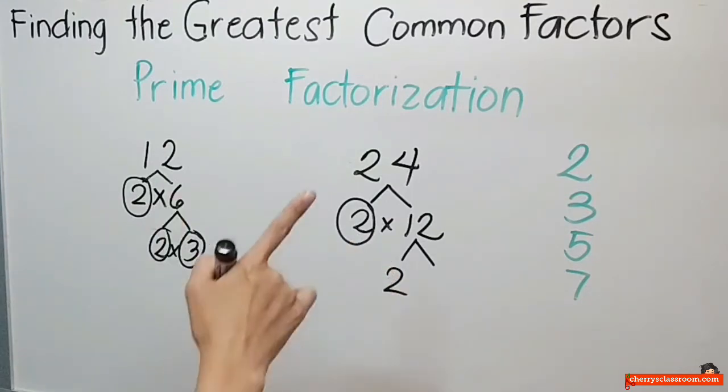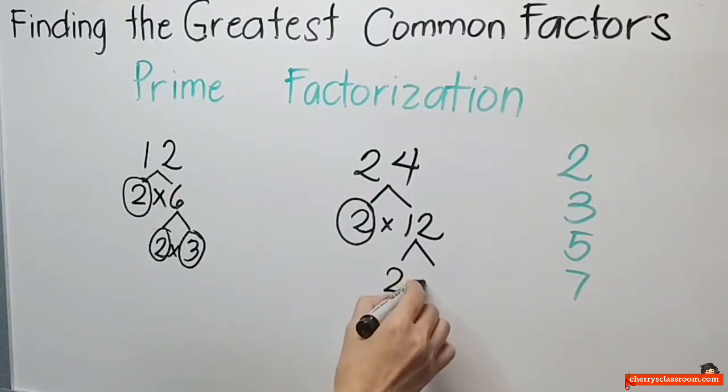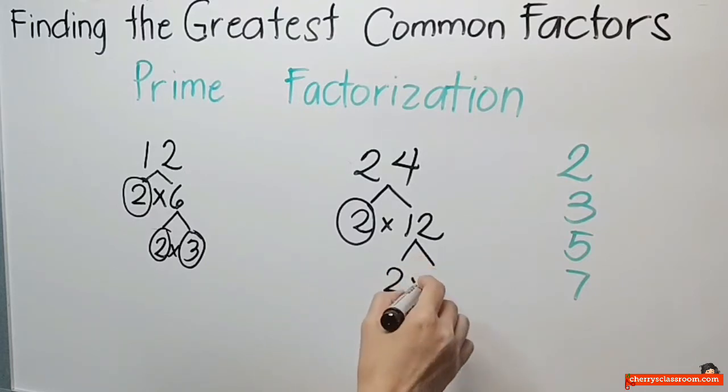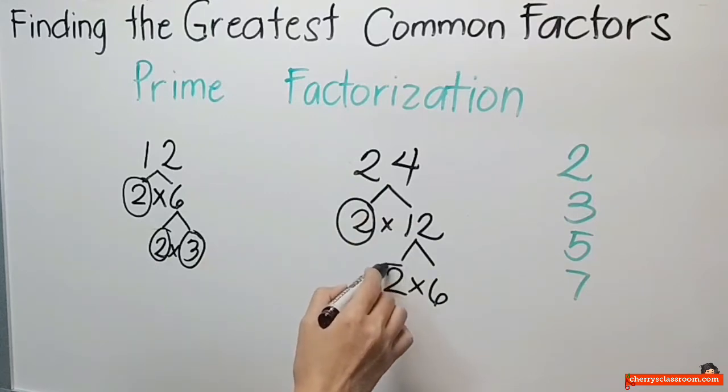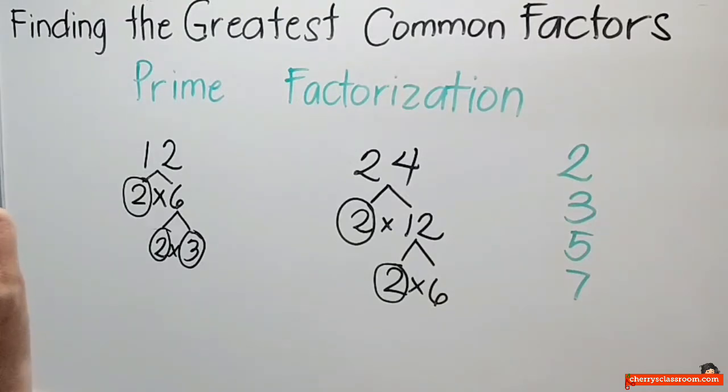So, anong number mong multiply ko sa 2 na ang sagot ay 12? So, 2 times 6, kasi 2 times 6 ay 12. So, ang 2 dito, prime na rin. So, ang 6 na lang. So, 6 na ako ngayon mag-focus. Anong number ngayon ang ipang-divide ko sa 6? Anong prime factor ang pwede sa 6? Pwedeng 2, pwedeng 3. Pinili ko ang 2.